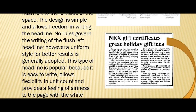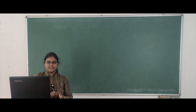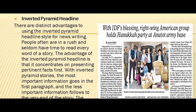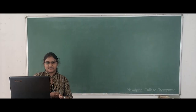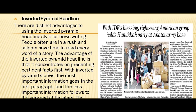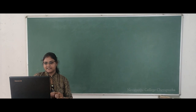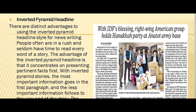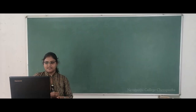Next, our topic is the inverted pyramid headline. When writing an inverted pyramid news lead, the most important information comes first, then less important, and finally the least important. The inverted pyramid headline uses the same formula. There are distinct advantages to using this style for news writing — people are often in a rush and seldom have time to read every word. The advantage is that it concentrates on presenting the most pertinent facts first. You can see the example here.